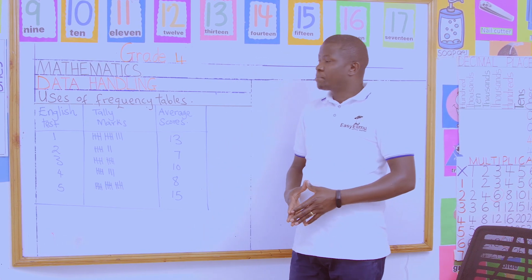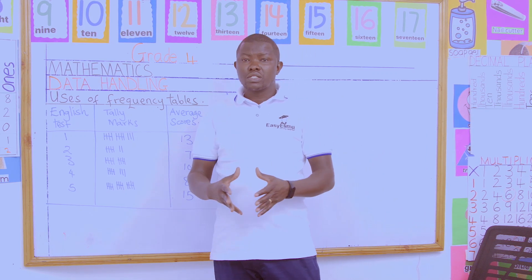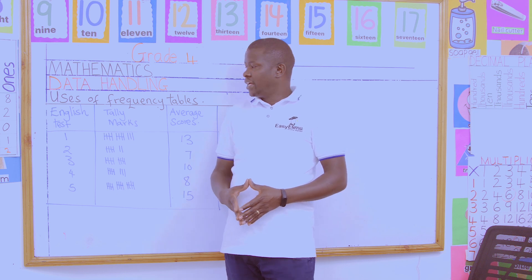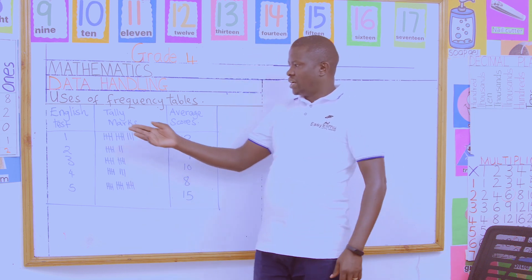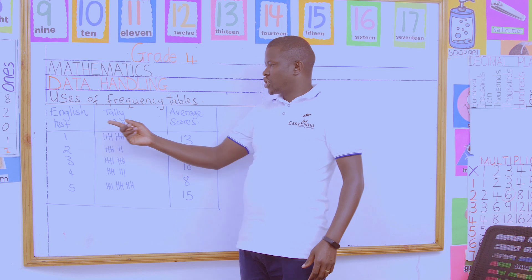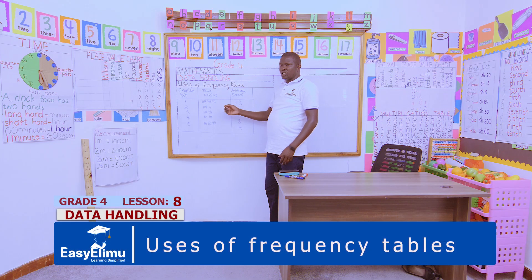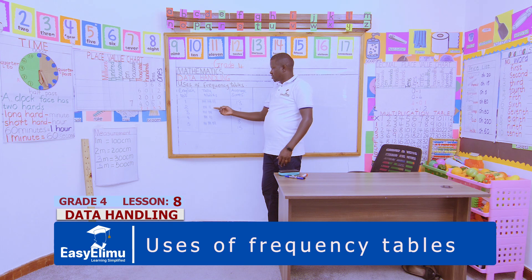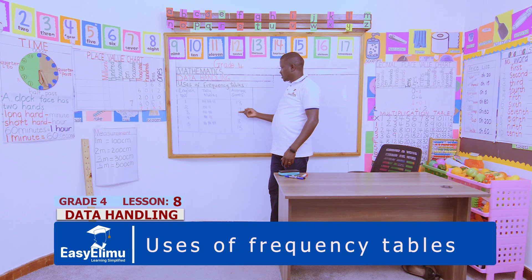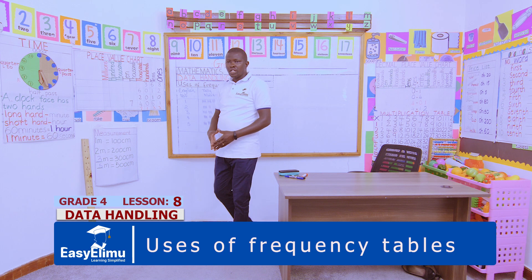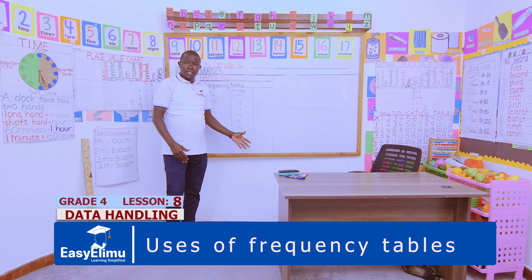The frequency table represents tests done in English subject in our class. Test 1 of English had an average score of 13, represented using tally marks. The second test had an average score of 7. Test 3 was 10, test 4 was 8, and test 5 was 15. We have already represented these on the frequency table.